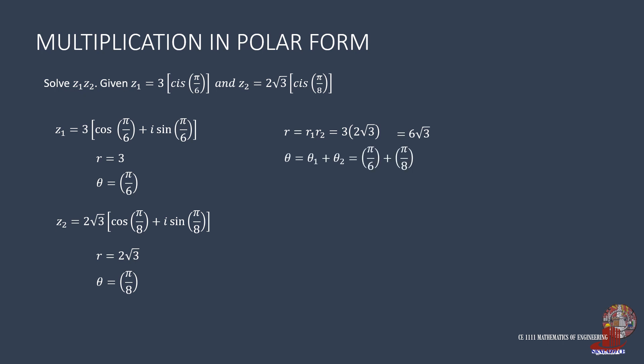Theta is pi over 6 plus pi over 8. Taking the least common denominator, convert pi over 6 as 4 pi over 24 and pi over 8 as 3 pi over 24, added together as 7 pi over 24. The resulting complex number in polar form is then 6 root of 3 times cosine of 7 pi over 24 plus i sine of 7 pi over 24.